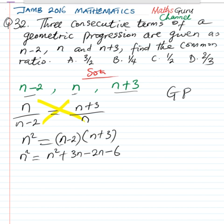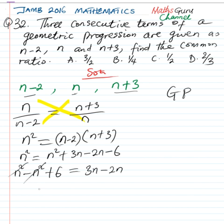We're going to collect like terms now. I'm going to have n squared minus n squared, rearrange plus 6 equal to 3n minus 2n. n squared can go with n squared, so we have 6 equal to 3n minus 2n, which is simply n.